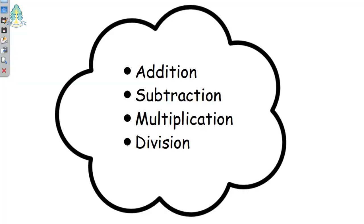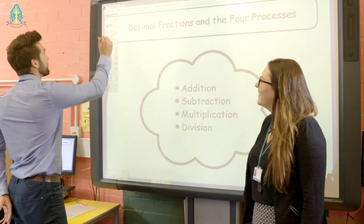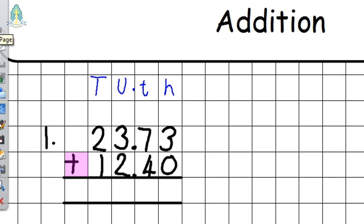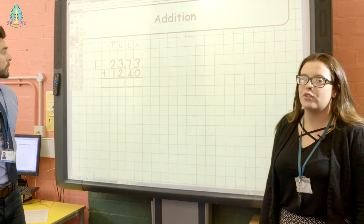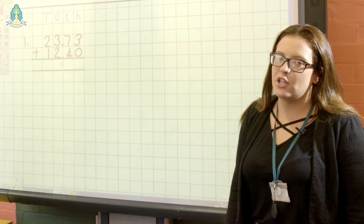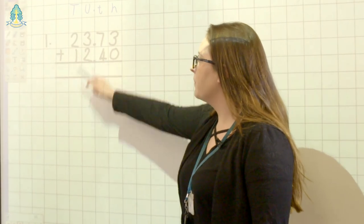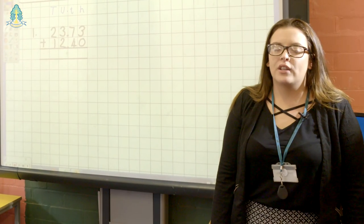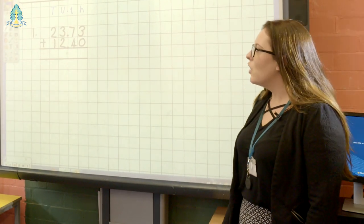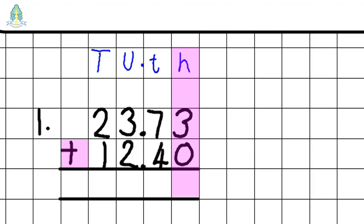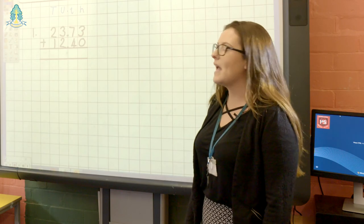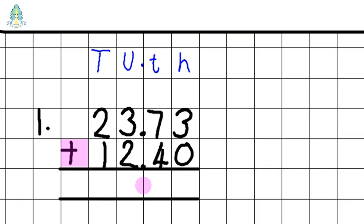The children will be familiar with the layout of an addition calculation. It's important to remind the children that each digit has a box of its own and the decimal point is always placed on the line. When beginning an addition calculation with a decimal fraction, we start over at the right hand side — the hundredths column. Before we begin, we always ask the children to place the decimal point in the answer box, as this avoids confusion.